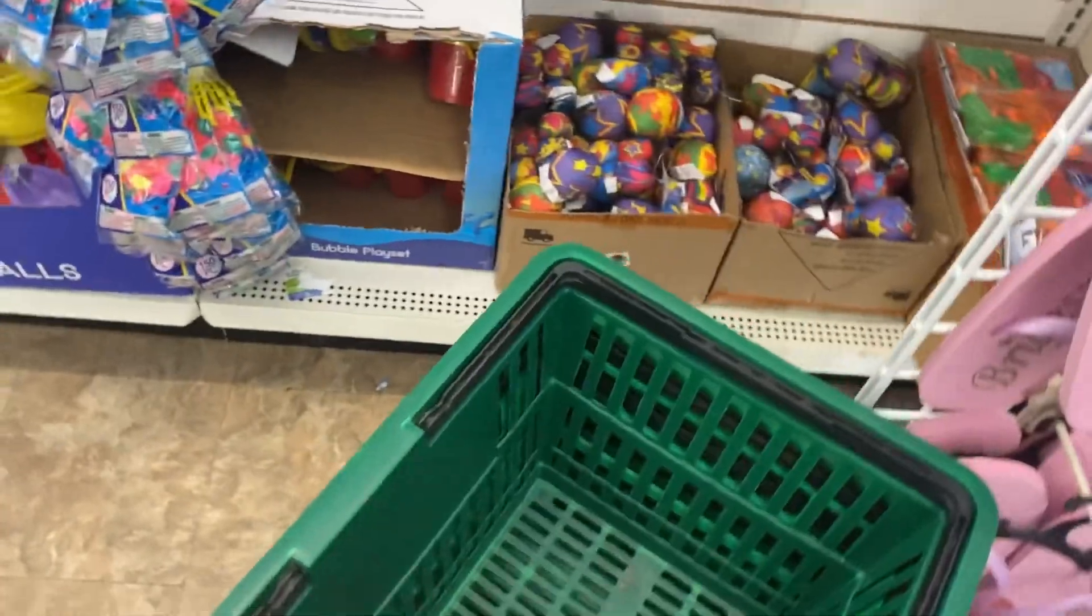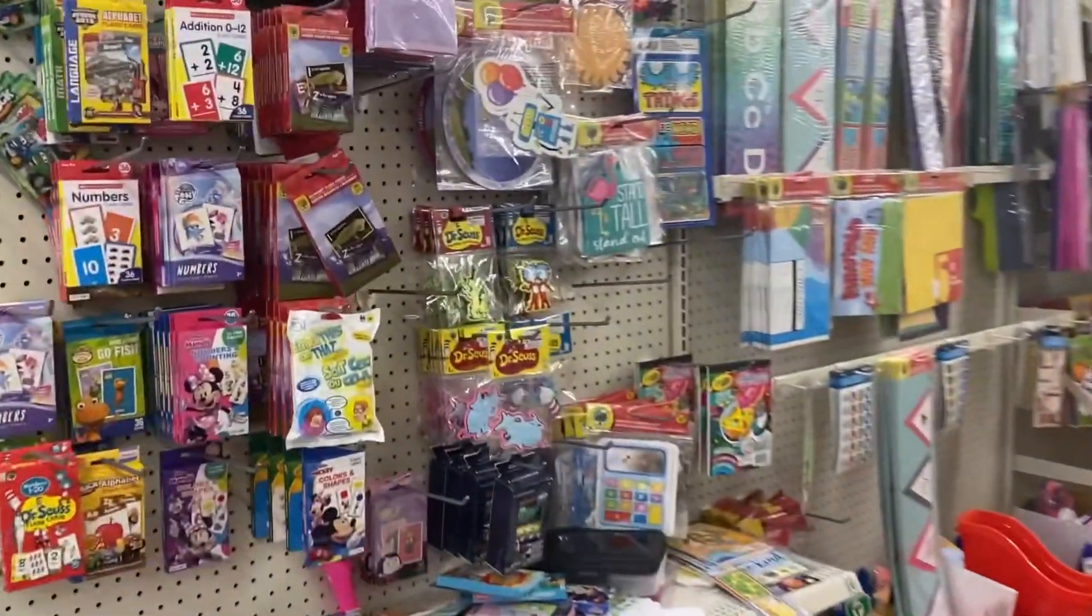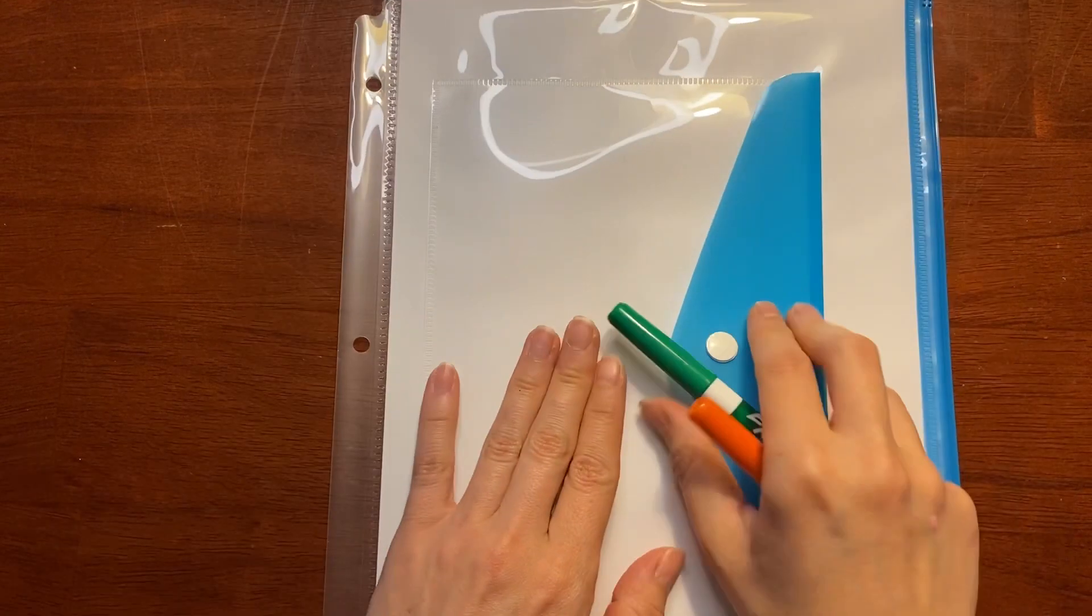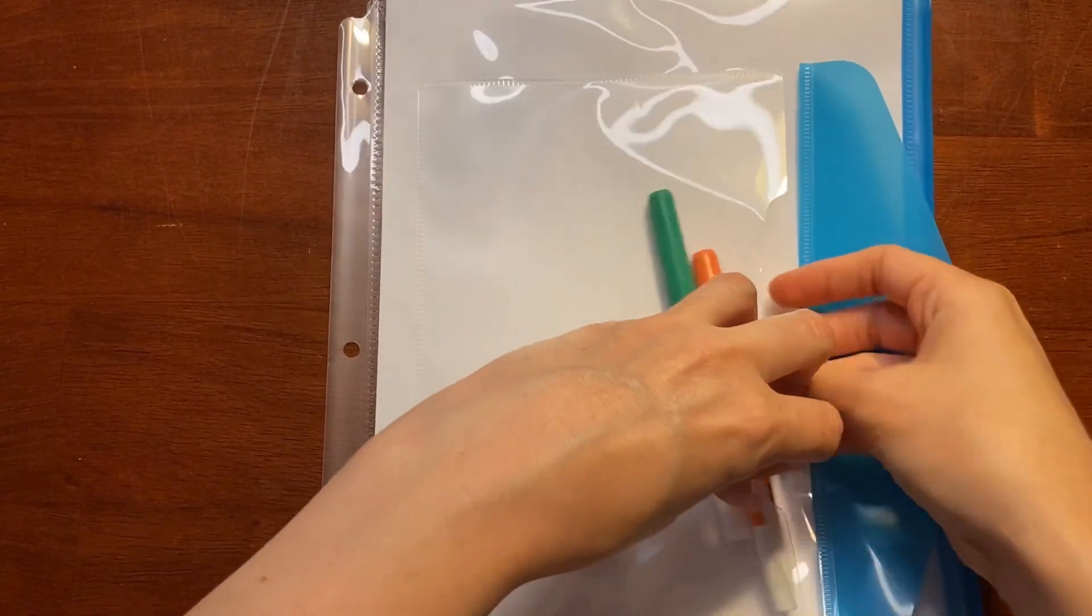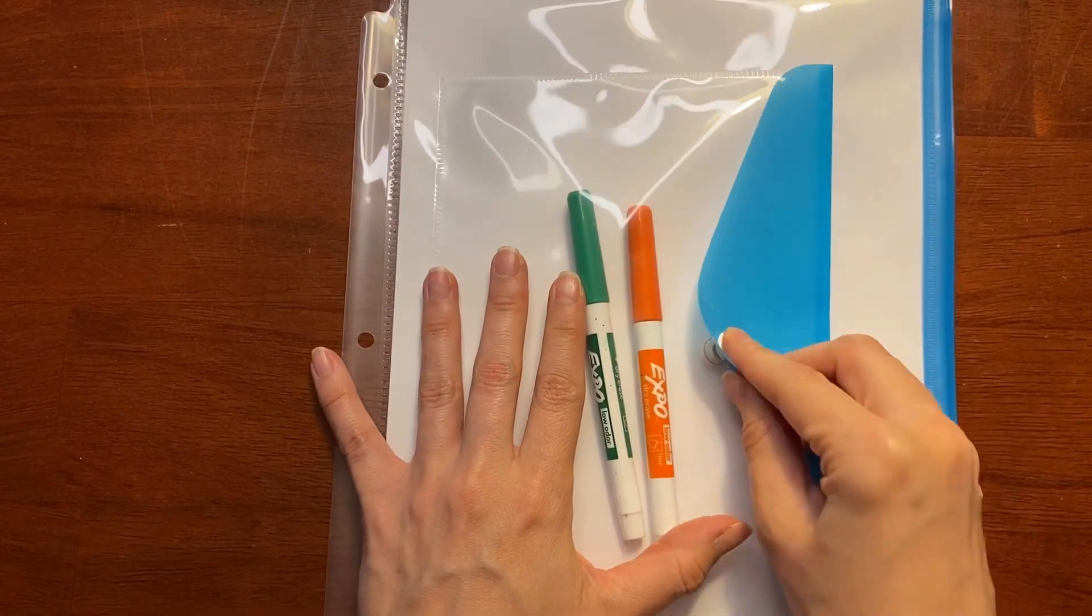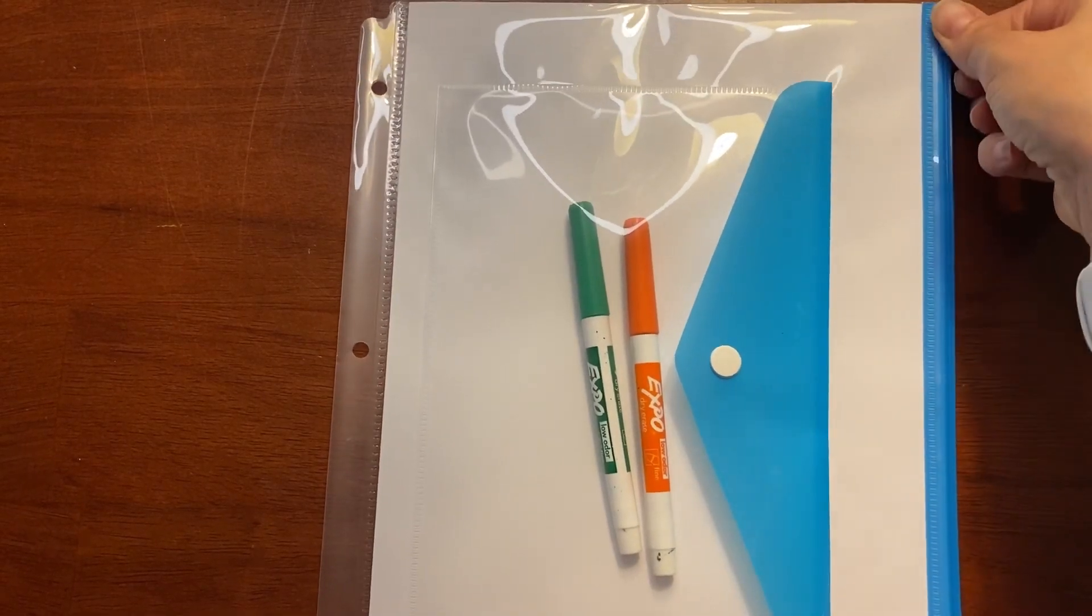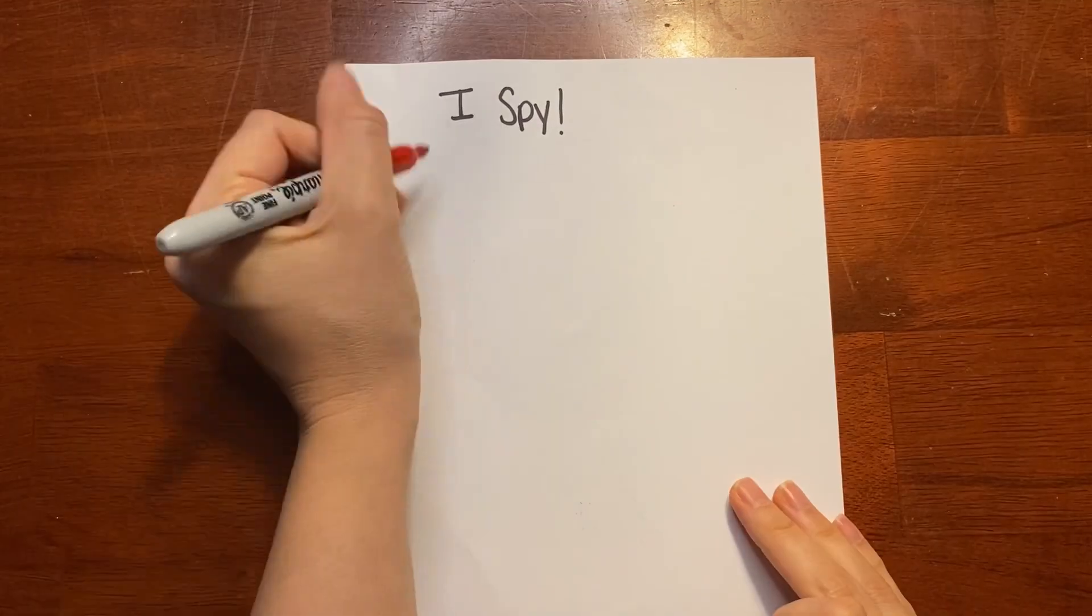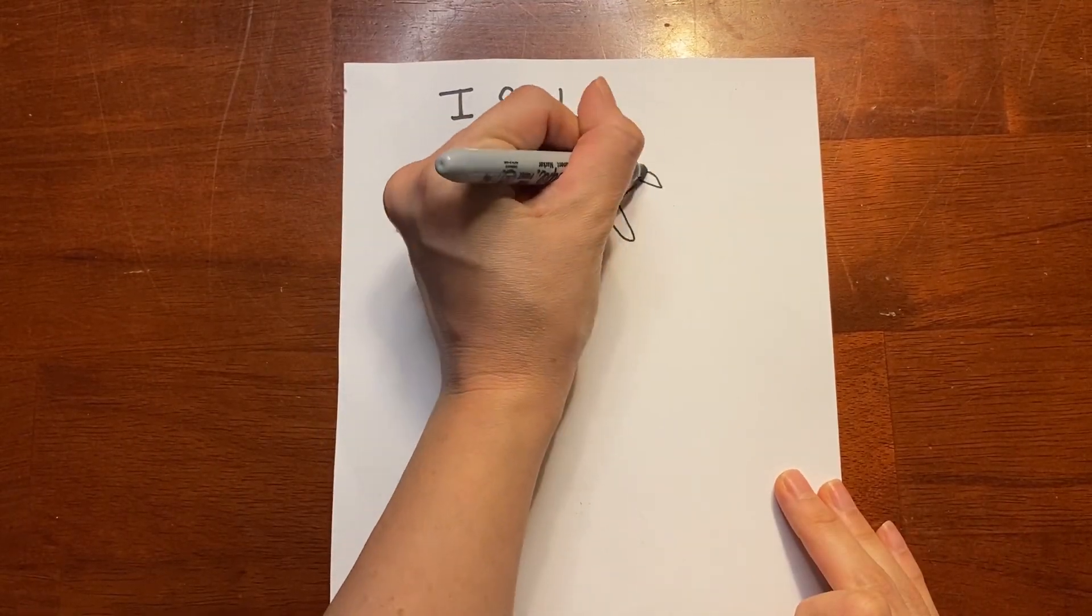Once you are in the Dollar Tree, grab your basket and head over to the arts and crafts area where you will find this pocket pouch. It looks just like a sheet protector but it has an adorable pocket on it. Might be the teacher in me. You'll see later that I don't just use that pocket for markers, it's also used for other items.